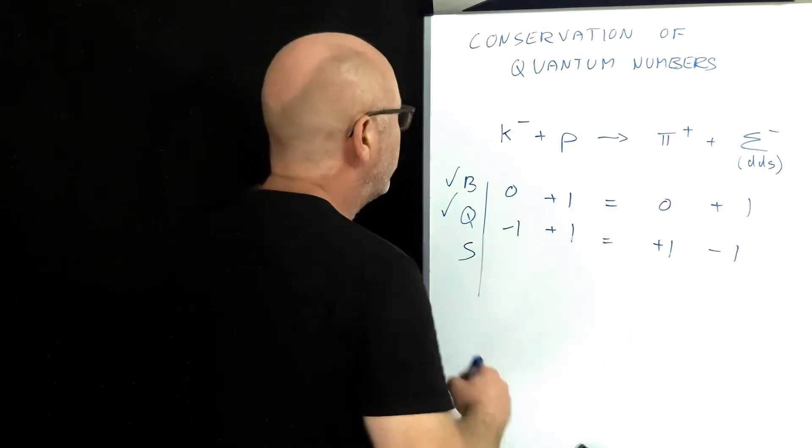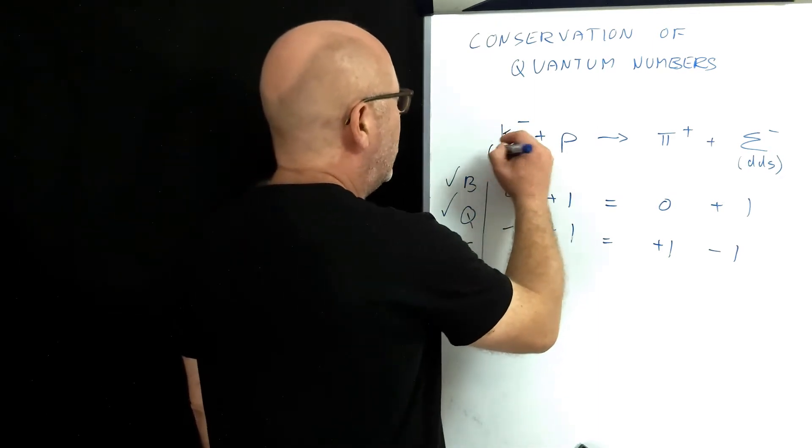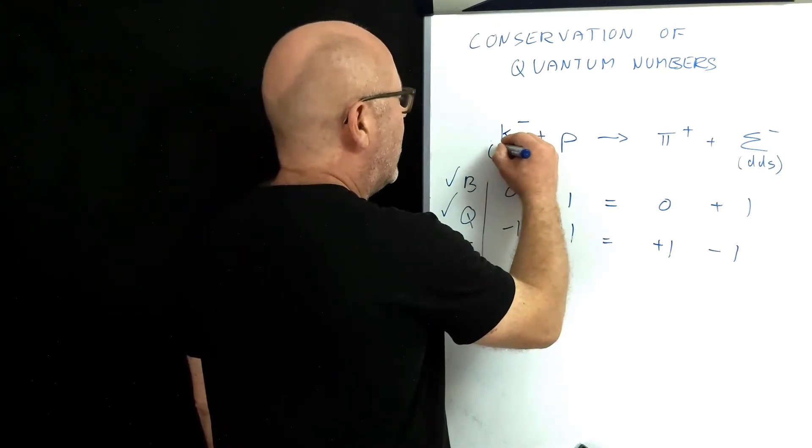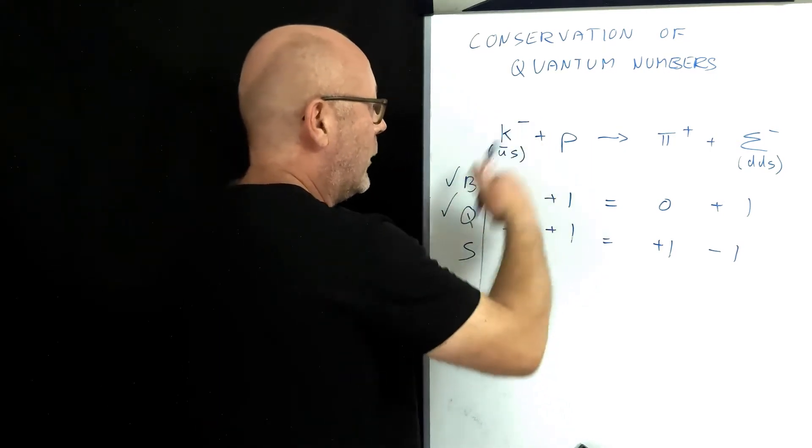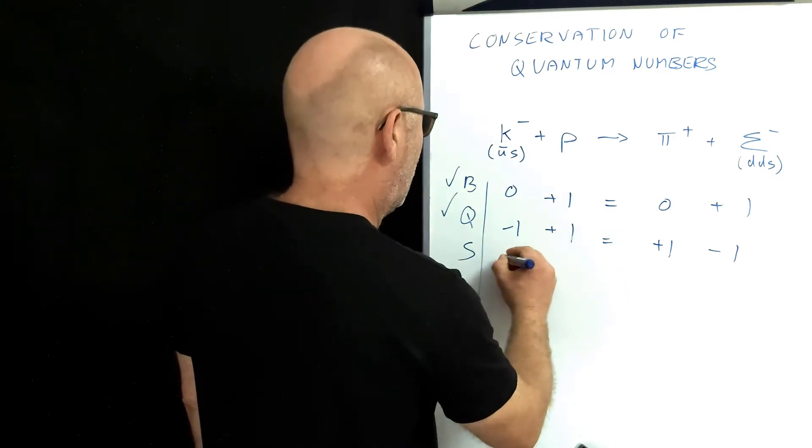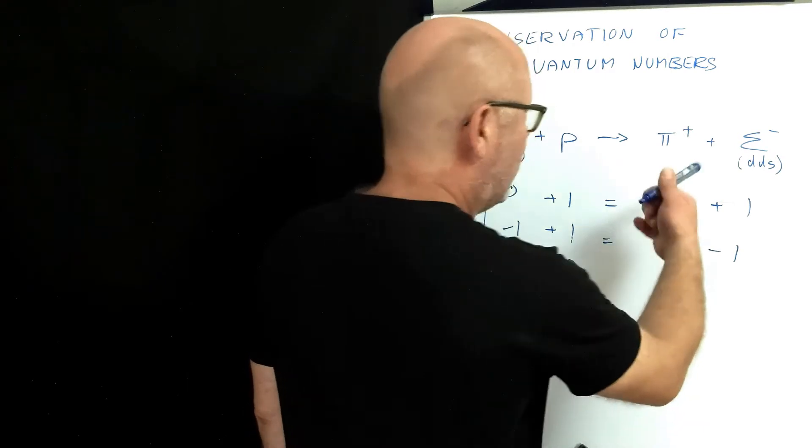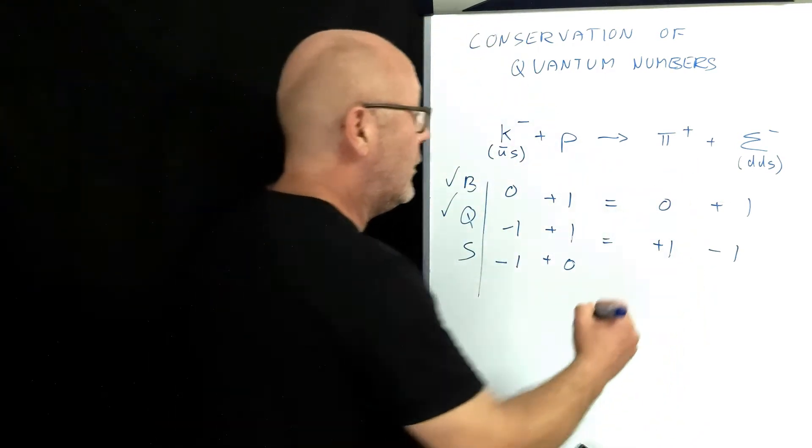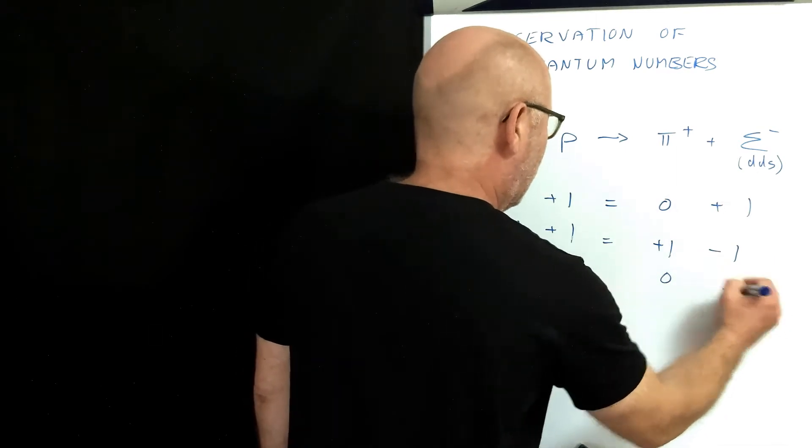Let's check the strangeness. Well, K minus, it must be, let me think, an anti-up and a strange. Minus two thirds, minus one third, is minus one. So it has some strangeness. So it's going to be minus one. The proton has no strangeness. The pion is only made of up and down, so no strangeness. And the sigma has got a strange quark, so minus one. Check!